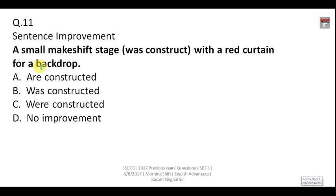A small makeshift stage with a red curtain for a backdrop. You have to improve this sentence, improve this bracketed part. The sentence has been written in passive voice, so this 'was' will be followed by third form of the verb. Here your answer is 'was constructed'.